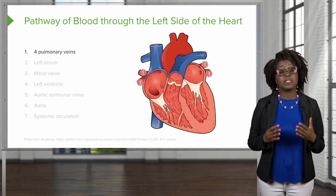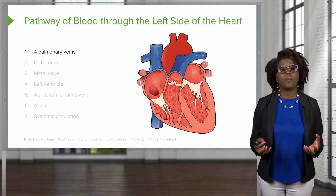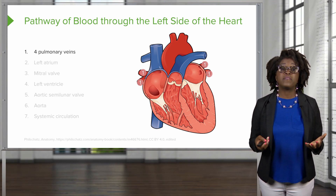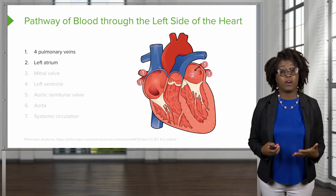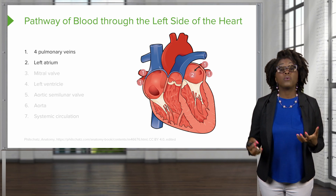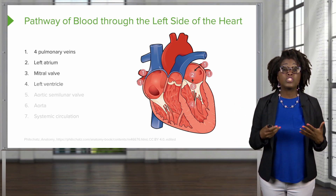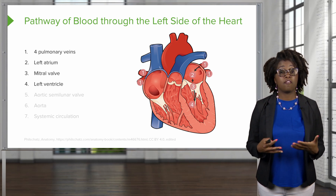On the opposite side of the heart, or the left side of the heart, we have four pulmonary veins that are going to feed into the left atrium of the heart. Once in the left atrium, the blood will travel through the mitral valve into the left ventricle of the heart.